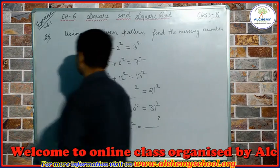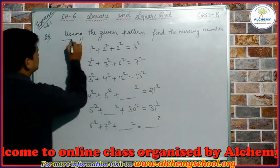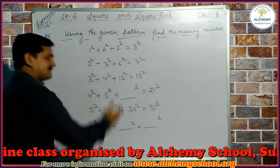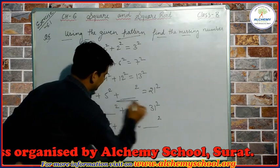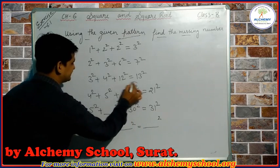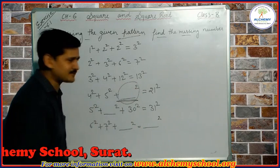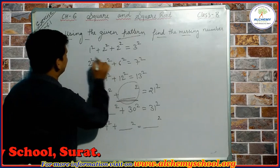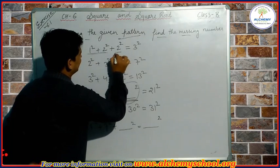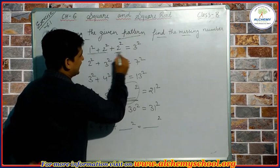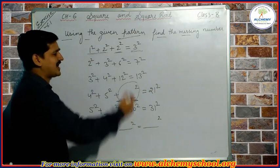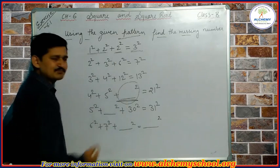So let's see what is given in question number 6. According to question number 6, we have to use the given pattern to find the missing numbers. Many numbers are missing in this pattern and we have to find them. When we observe the pattern, we can see that when we multiply two numbers we get the third number, and when we add 1 to that third number we get the final result. We have to apply this procedure throughout the question.